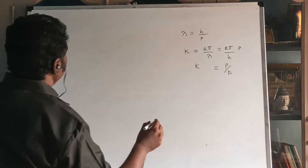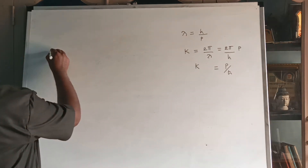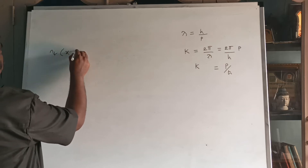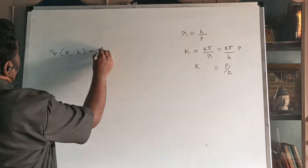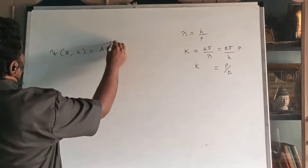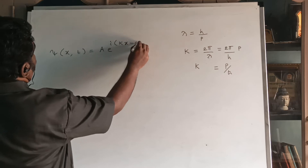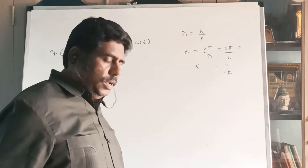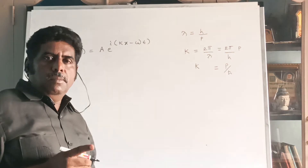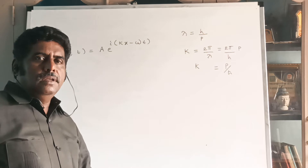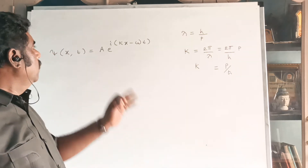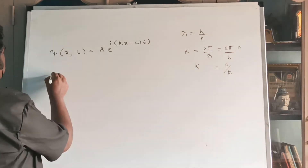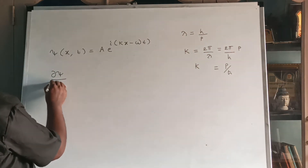As pointed out earlier, the particle motion is expressed in terms of a wave. The wave equation is ψ(x, t) = A · e^(i(kx − ωt)). To get the momentum operator px, we differentiate this equation with respect to x.